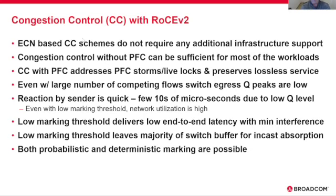Another aspect that is sometimes overlooked is interference between different threads or applications using the network. If we let the congested queue build up to a significant level, there can be significant impact on latency that a victim flow will experience trying to traverse the network through the congested queue. This is one of the emphases both in the design of the congestion control and in what we look for in the benchmark. Some of the benchmark results we show today will demonstrate the effectiveness of congestion control with a low marking threshold.